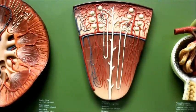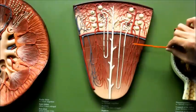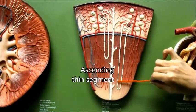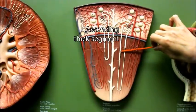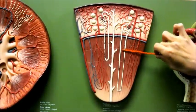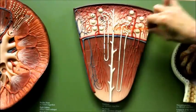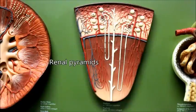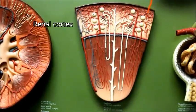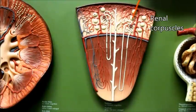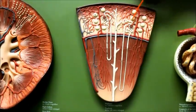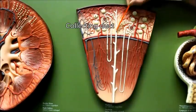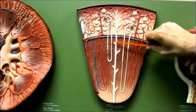Let's also talk about the parts of the loop of Henle. These include the descending thin segment, the ascending thin segment, and the thick segment of the loop of Henle. In both the cortical nephron and the juxtamedullary nephron, the loop of Henle dips into the renal pyramids. In the renal cortex region, you'll find the renal corpuscles, the proximal convoluted tubule, the distal convoluted tubule, and parts of the collecting duct. Most of the collecting duct is found in the renal pyramid.